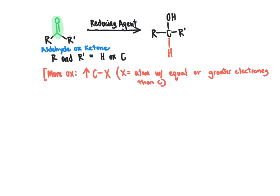Corresponding to that increase in the number of bonds between carbon and a electronegative atom is going to be a decrease in the number of bonds between carbon and hydrogen. On the other hand, a more reduced molecule will feature a lower number of carbon bonds to oxygen or some other atom equal to or greater than carbon in electronegativity, and an increase in the number of carbon-hydrogen bonds.